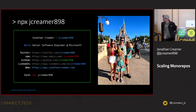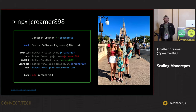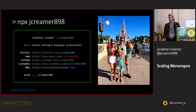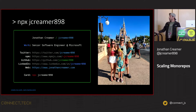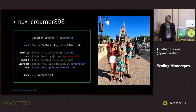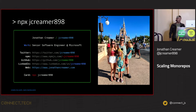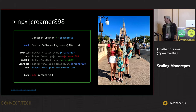This is me. You can actually NPX jkrimer898 — that is a real thing. It's called Create My Card, made by Tierney from Microsoft. My name is Jonathan Krimer. I'm a senior engineer at Microsoft. You can find me on all the things at jkrimer898. I blog at jonathankrimer.com.